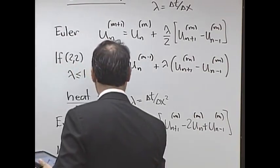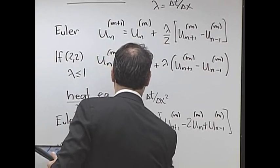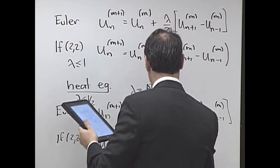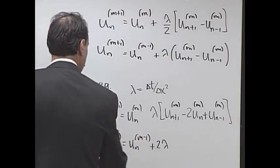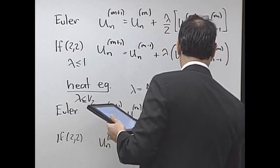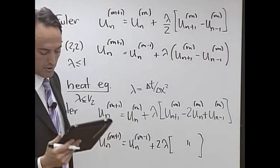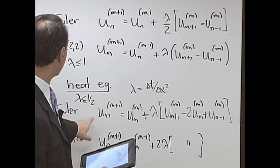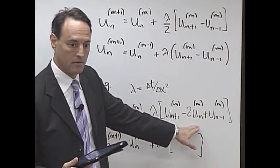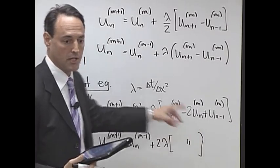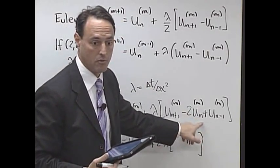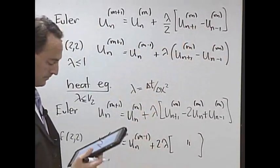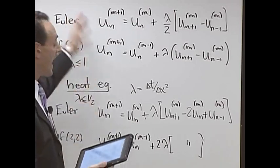And then for LeapFrog, it was u of n, m plus 1 equals u n, m minus 1, and then plus 2 lambda. Oh, that's a plus lambda there, not an equal. Plus 2 lambda, and then that same thing there. So those are the two schemes. Notice the heat equation has two derivatives, right? So you have point front, point behind, minus 2, the twice point. The wave equation is just neighbors. So these are the u of x terms, these are u x x terms.